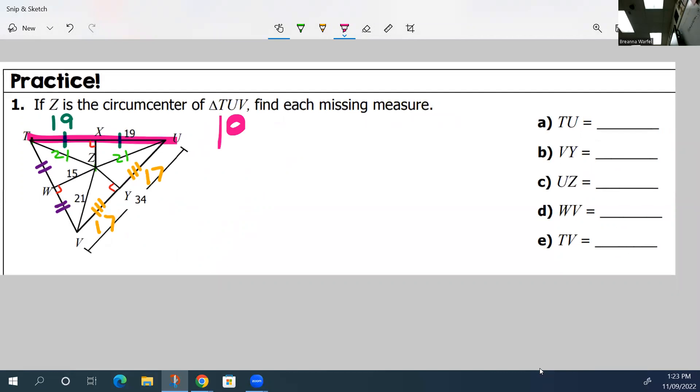So 19 and 19 together is 38. So that was pretty easy to find. And then we're going to move on to the next one. So the next one is VY. From V to Y. V to Y is here. We already found that. That's 17.